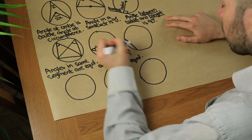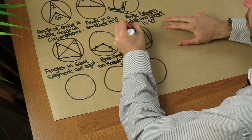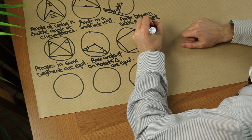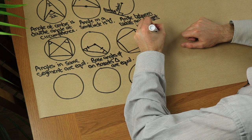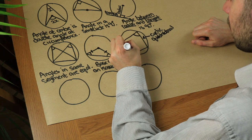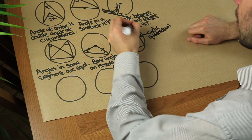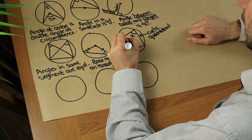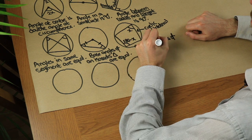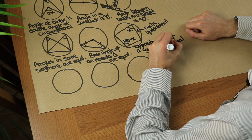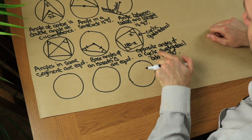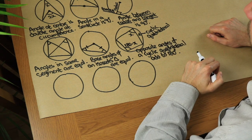The next circle theorem: if we have a quadrilateral where all four vertices lie on the circumference of the circle, it is known as a cyclic quadrilateral. It is only a cyclic quadrilateral if all four corners are on the circumference. The theorem is: opposite angles of a cyclic quadrilateral add to 180 degrees. If one angle is x, the opposite angle is 180 minus x.